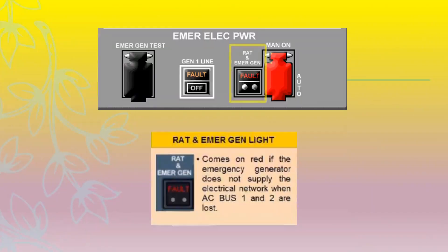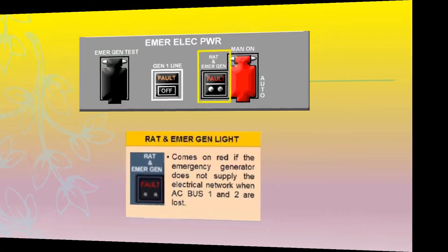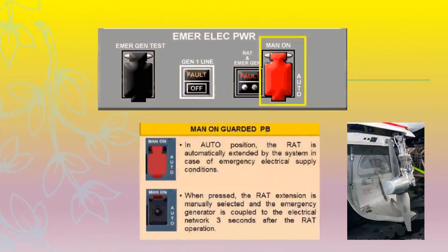The RAT and emergency generator light comes on red if the emergency generator does not supply the electrical network when AC bus 1 and 2 are lost. When the manual ON guarded pushbutton switch is in auto position, the RAT is automatically extended by the system in case of emergency electrical supply conditions. When pressed, the RAT extension is manually selected and the emergency generator is coupled to the electrical network three seconds after RAT operation.